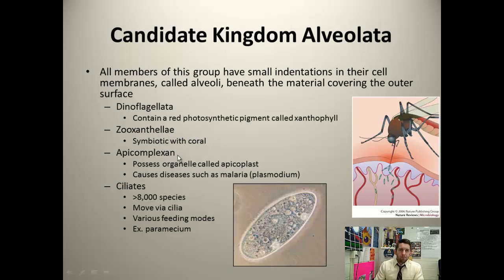The apicomplexin — one specific member of this group, the plasmodium, is transmitted through mosquitoes. It kills millions because it causes malaria — a big problem in Africa along with HIV. And the ciliates: you've probably all heard of paramecium. Here's a paramecium with cilia going around the outside.